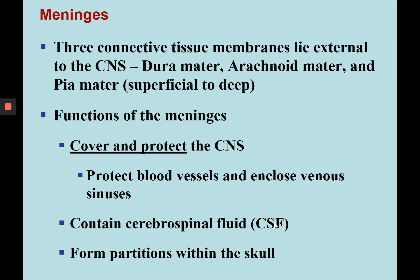The meninges are three connective tissue membranes that lie external to the central nervous system but around the brain and spinal cord. They are the dura mater, arachnoid mater, and pia mater — listed superficial to deep. All meninges cover and protect the central nervous system; within them you may find venous sinuses and blood vessels. The dural sinuses are parts of the dura mater that invade large fissures of the brain and form partitions within the skull.